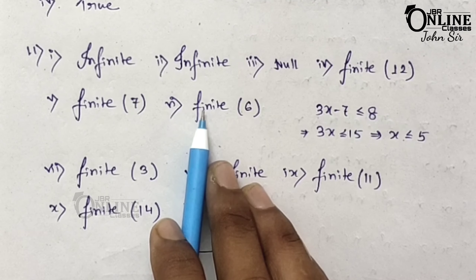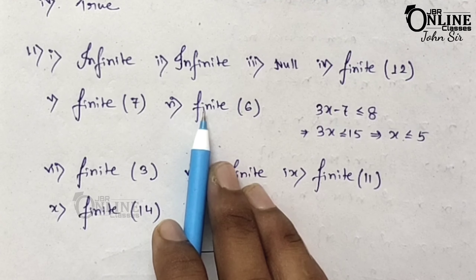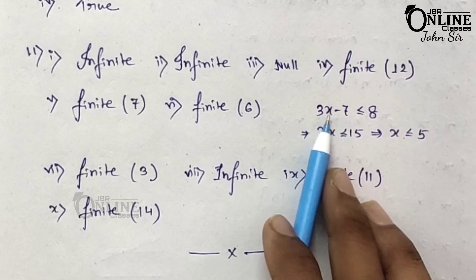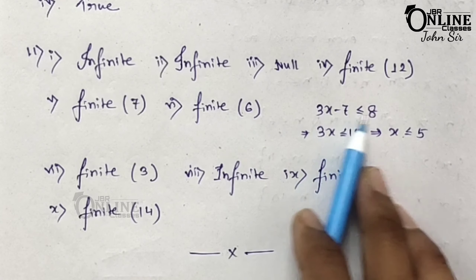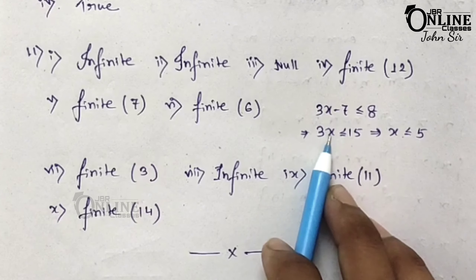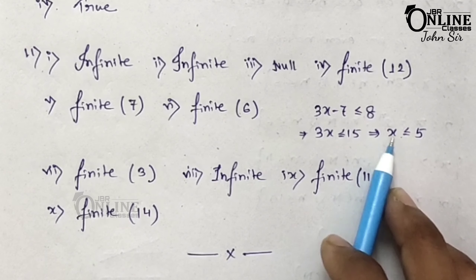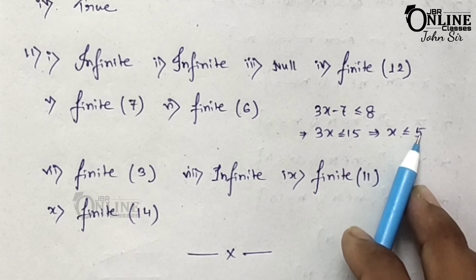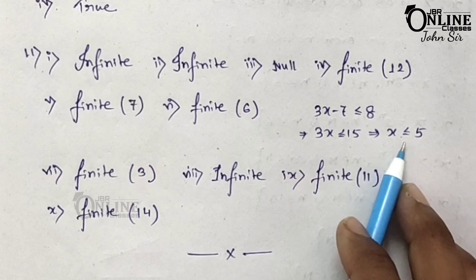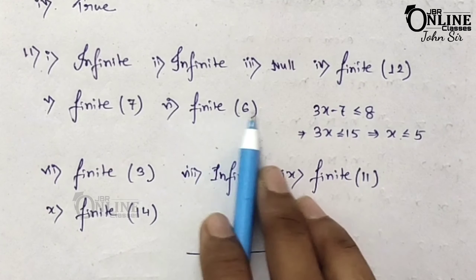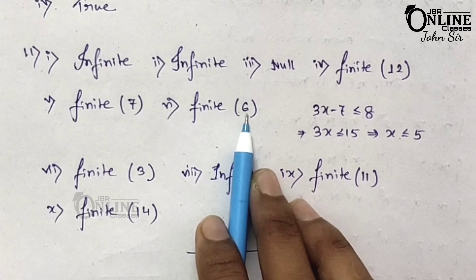Number 5: x such that x is a two-digit number whose digits sum to 12. It's a finite set. The cardinal number is 7. Number 6: x such that x belongs to whole numbers and 3x minus 7 ≤ 8. That means 3x ≤ 15, so x ≤ 5. It's a finite set and the cardinal number is 6.